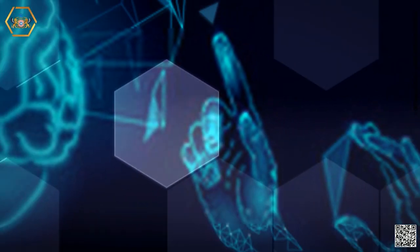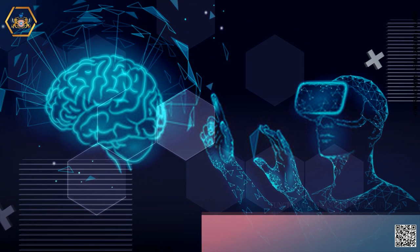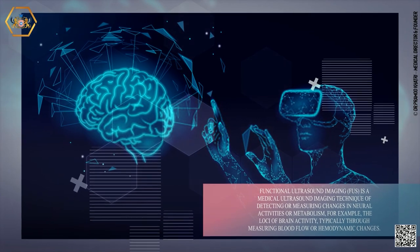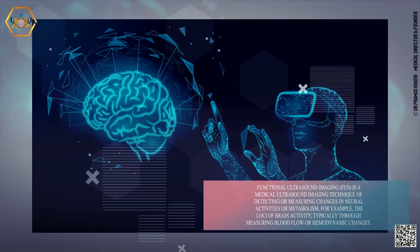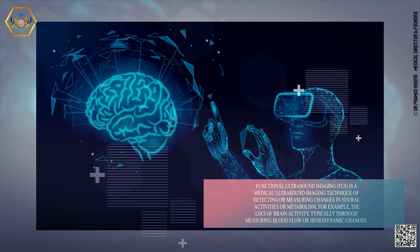Functional ultrasound imaging, FIS, is a medical ultrasound imaging technique of detecting or measuring changes in neural activities or metabolism, for example, the loci of brain activity, typically through measuring blood flow or hemodynamic changes.